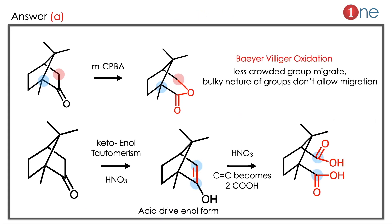The answer is A. The starting material is a bridged carbon system where methyl groups are on the bridge and a carbonyl is in the lower ring. If you use mCPBA (meta-chloroperoxybenzoic acid), a Baeyer-Villiger oxidation occurs — oxygen is inserted, but only the less bulky group migrates (bulky groups normally do not migrate), so an ester (lactone) is formed. If you use nitric acid, you first write the keto-enol tautomerism because you are using acidic conditions — the enol form is stable in acid — and then oxidation of the C=C double bond by nitric acid gives two COOH groups. So the starting material is clearly A.